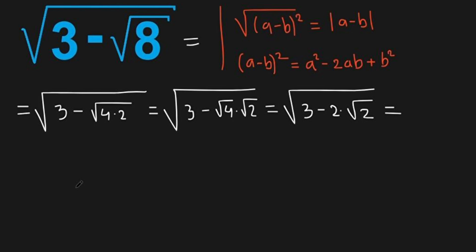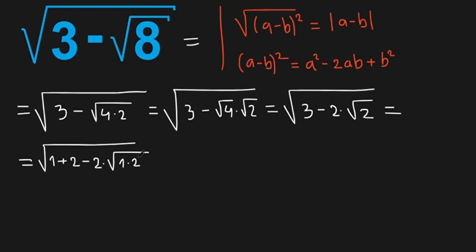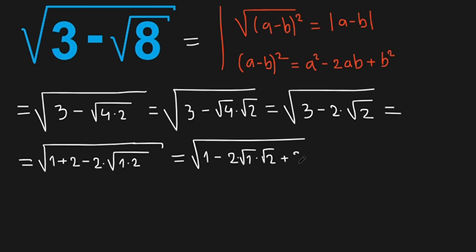Now let's simplify a little bit more. We can write square root of 3 as 1 plus 2, minus 2 times square root of 2, where the 2 is written as 1 times 2. So all this equals square root of 1 minus 2 times square root of 1 times square root of 2, plus 2.